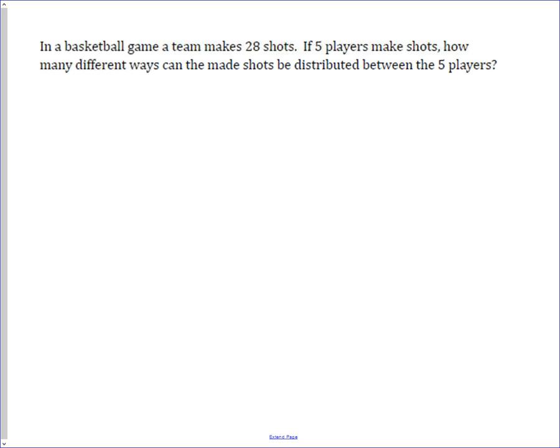In this problem, we're looking at a counting problem that has a very common correlation to another type of problem. When you read through it, you see that you've got a basketball team, so five players, and they make 28 total shots. One thing to pay close attention to: it says that five players make shots, which means that all five players do make a shot.